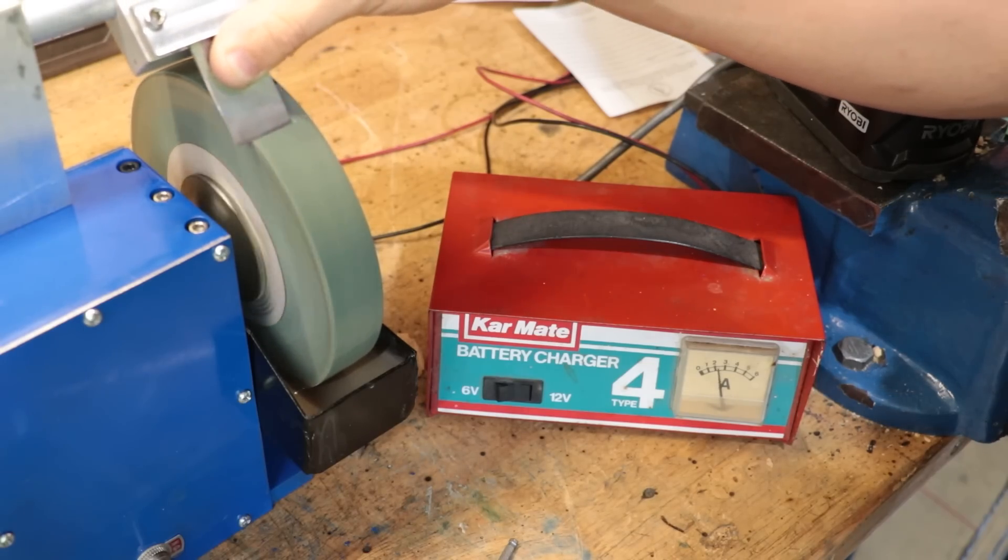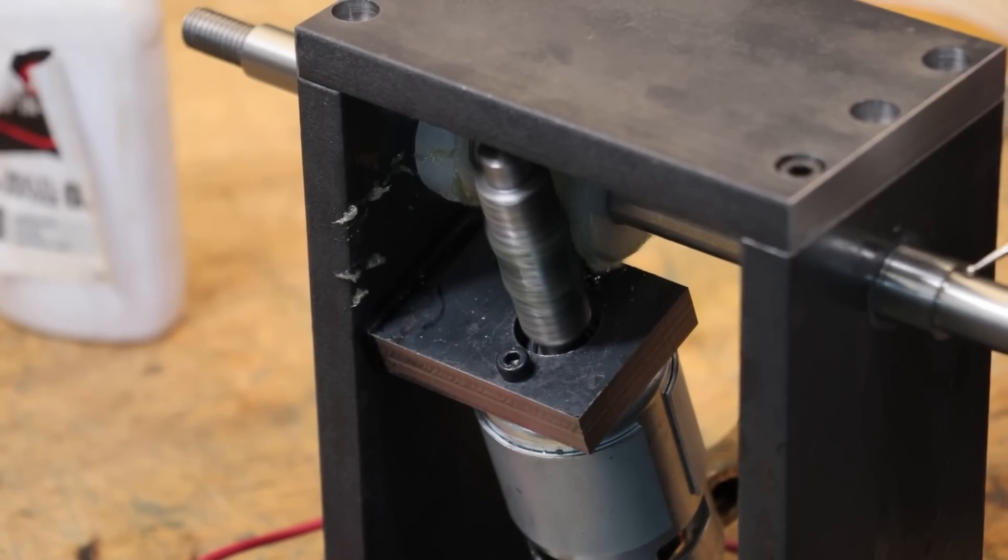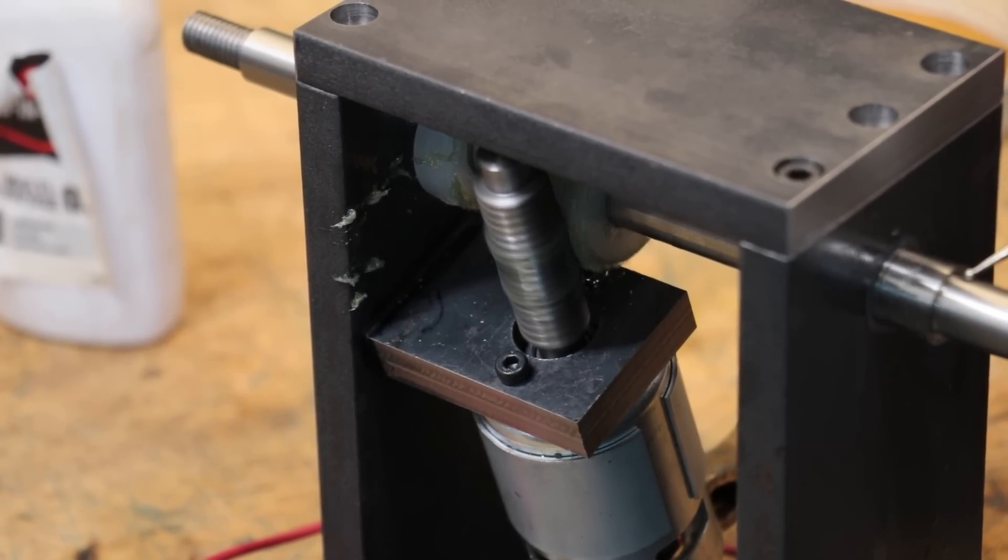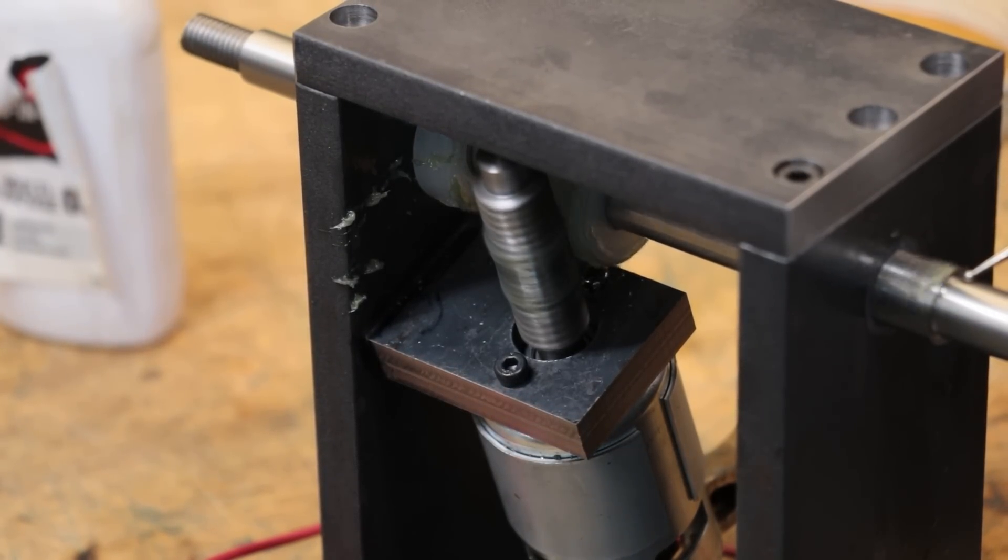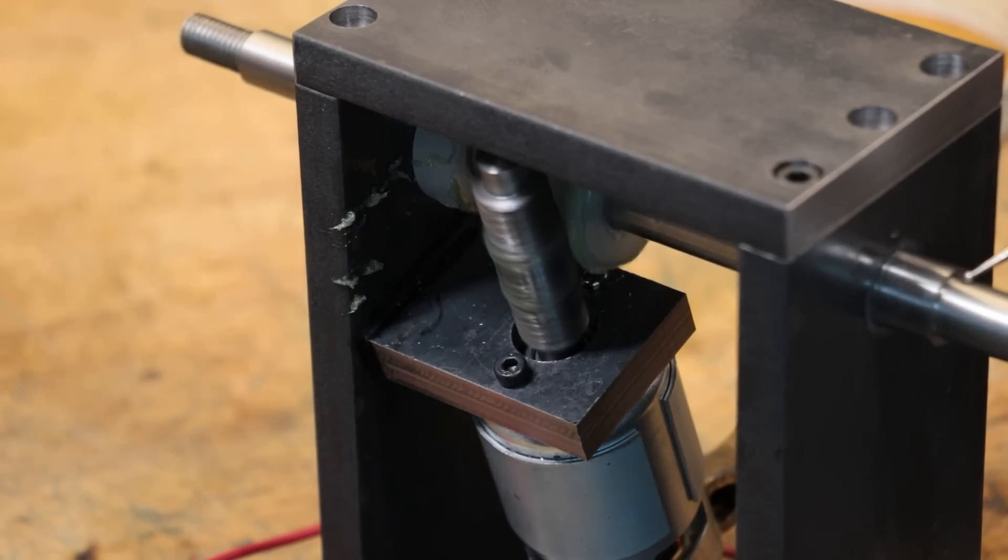Now you might expect given the small size of the motor that it would be hugely underpowered, but once you put it through the worm gearbox there is actually a huge amount of torque which is enough to drive the wet stones.